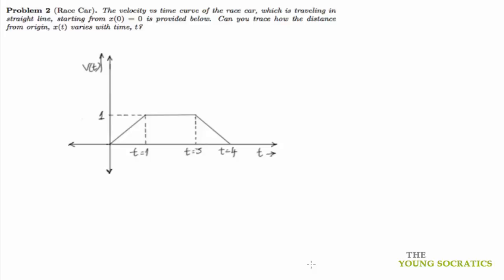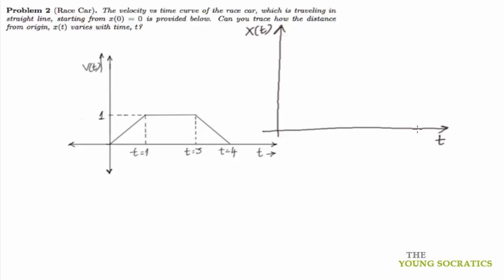For a race car, we have been given the curve v(t) versus t — velocity versus time. The initial conditions are x₀ = 0, meaning the object starts at the origin. What we need is to trace the curve x(t) versus t for the race car. We'll analyze the motion in different time slots: 0 to 1 second, 1 to 3 seconds, and 3 to 4 seconds, to plot the curve for x(t).